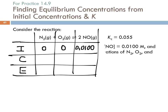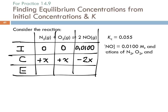Let's say NO decreases by 2X — so the change for NO is minus 2X. For every two moles of NO, we get one mole of N₂ and one mole of O₂, so both changes are plus X. Adding the rows gives us X for N₂, X for O₂, and 0.0100 − 2X for NO at equilibrium.